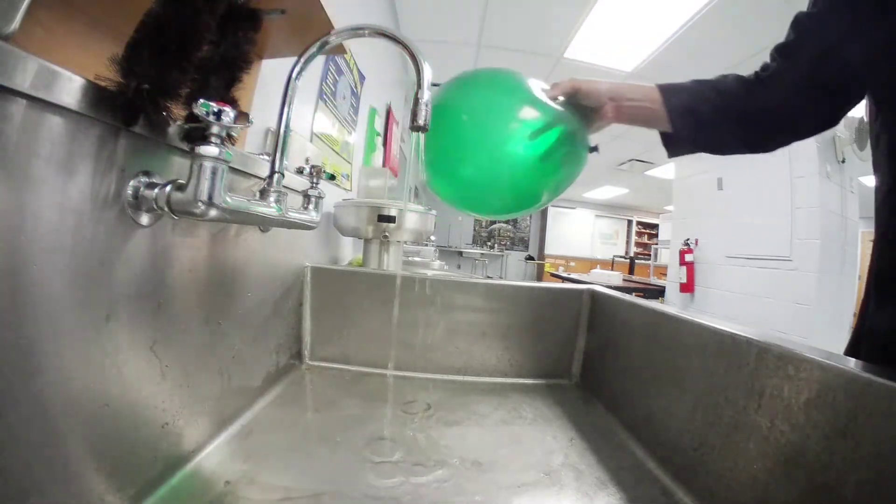You can do that at home. You've got a plastic comb. You put on a thin stream of water. And you rub the comb through your hair. You make the comb negatively charged.